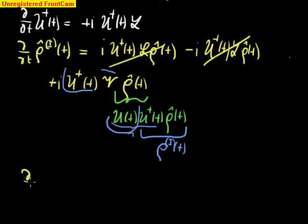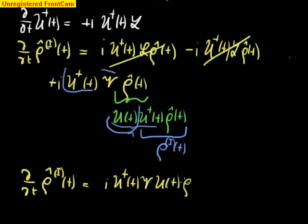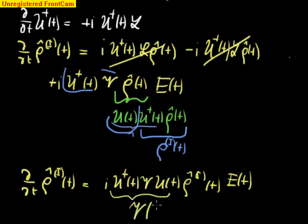So the equation of motion when we write it now in full is rho I T equal I U dagger T V U T rho I T, and we forgot here the electric field, and here we don't forget it. So that's the electric field. This operator, we will just denote curly V with T. So now we are ready.